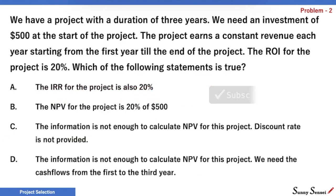Let's move to the next problem. We have a project with a duration of 3 years. We need an investment of $500 at the start of the project. The project earns a constant revenue each year starting from the first year till the end of the project. The ROI for the project is 20%. Which of the following statements is true? A: The IRR for the project is also 20%. B: The NPV for the project is 20% of $500. C: The information is not enough to calculate NPV — the discount rate is not provided. D: The information is not enough to calculate NPV — we need the cash flows from year 1 to year 3. Please pause the video and try to figure out the right choice.